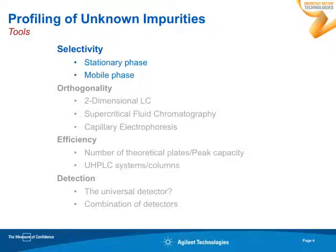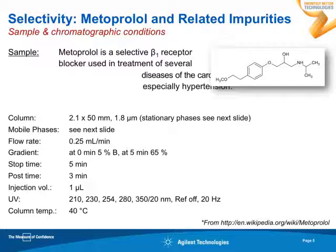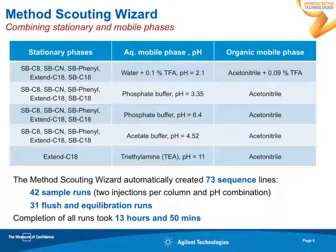Coming to the first part — selectivity and changing stationary phases and mobile phases. We chose an example: metoprolol and related impurities. If you're working in the pharma industry, simply replace metoprolol by your next blockbuster compound. The typical task is identifying impurities of pharmaceutical compounds in analytical runs. We want to make a screening first, so we chose short columns and rather short gradients — five-minute gradients. To ensure we cover many different separation conditions, we took five different columns and five mobile phases with different pH values. Using acetonitrile, with all combinations and two injections per sample, this ends up in 42 sample runs altogether.